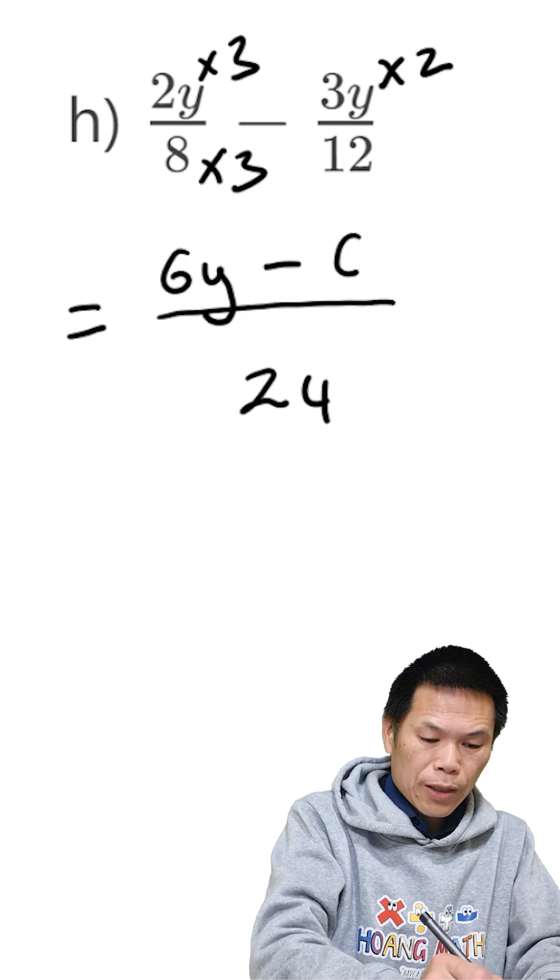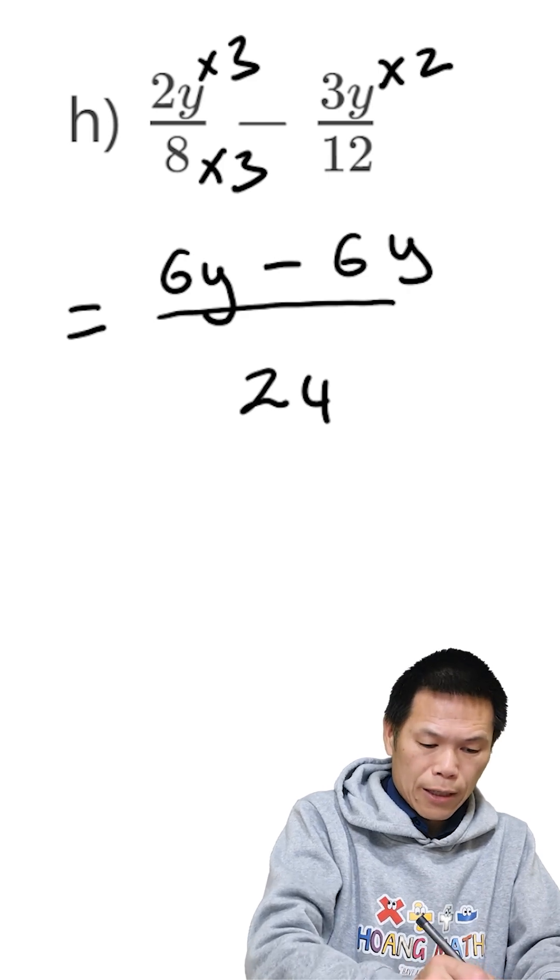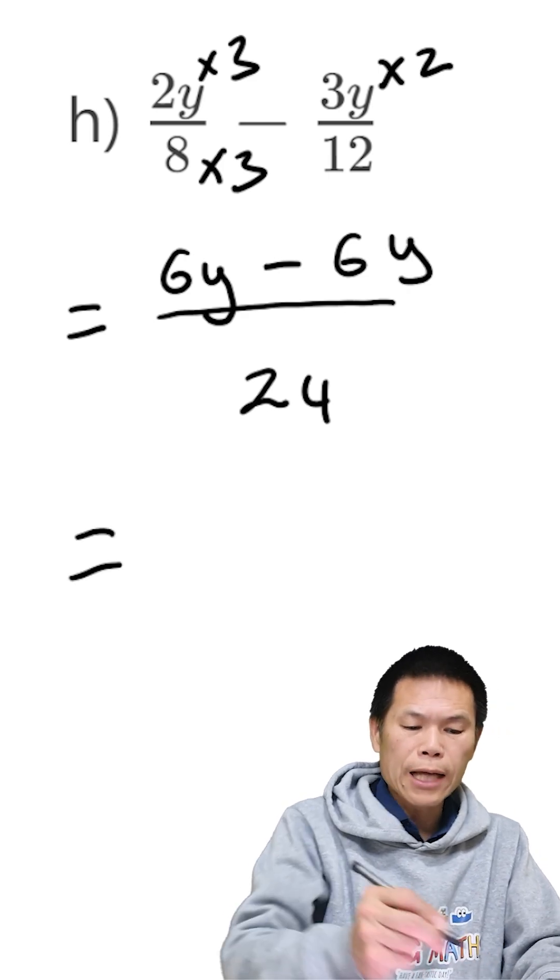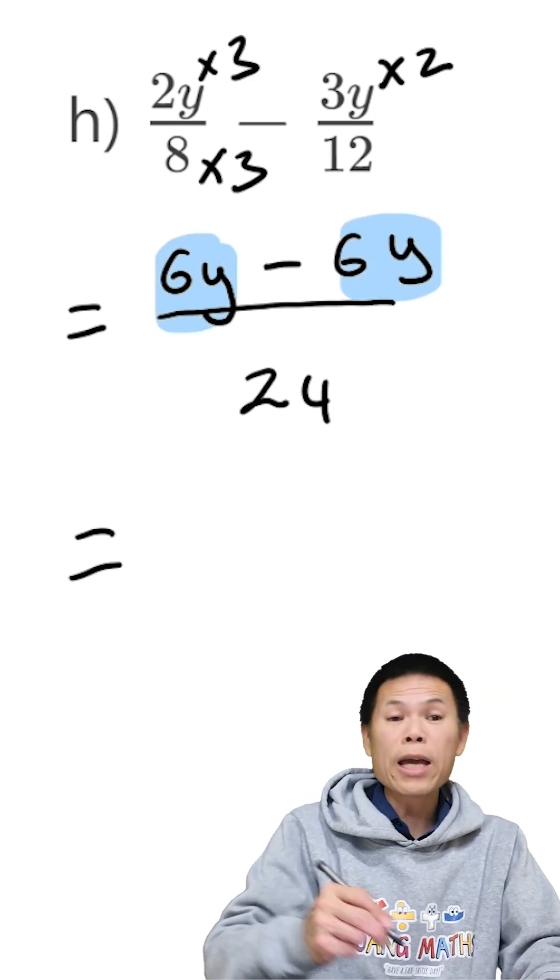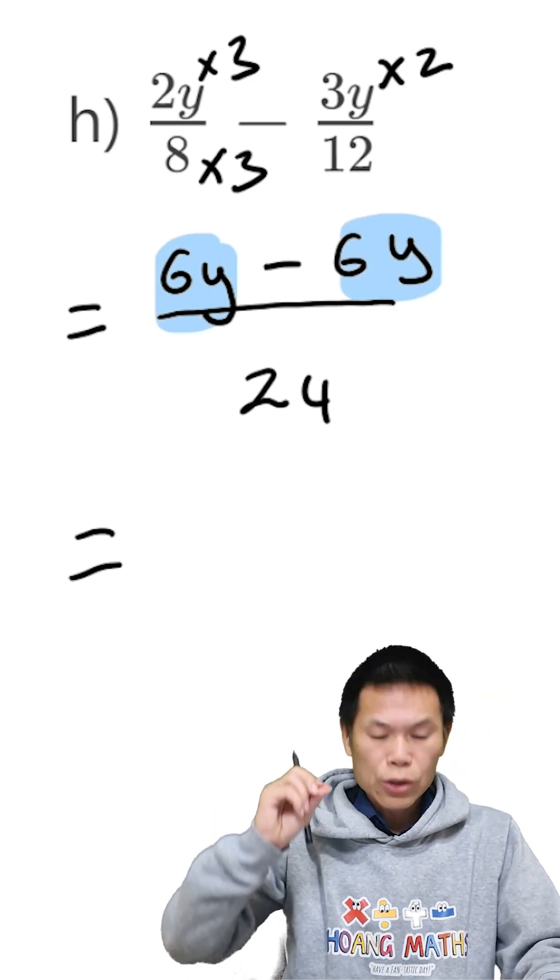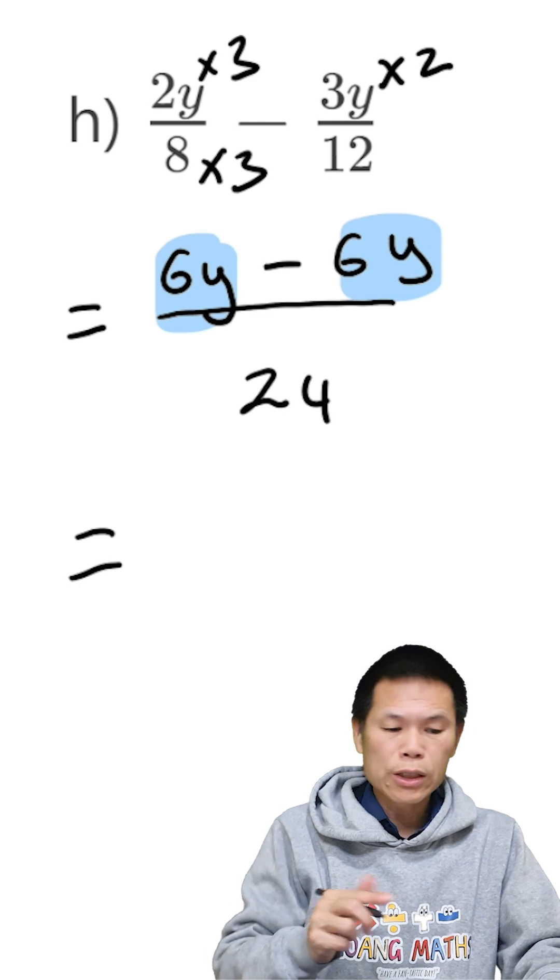So we minus 6y. That is equal to... we collect like terms now. We have 6y, we take away 6y. So the answer is 0. So 0 over 24.